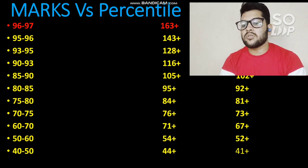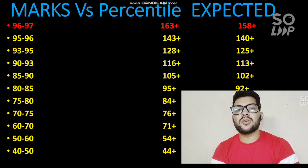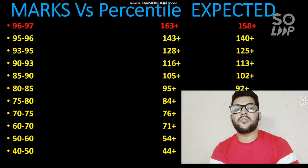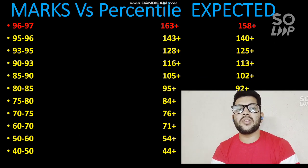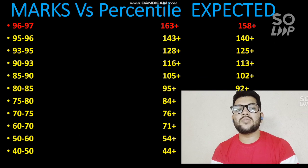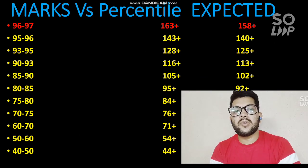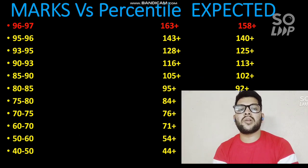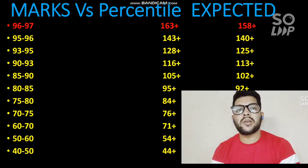More marks versus percentile data is available on screen — you can check it by pausing this video. That covers the full analysis of August 31st Shift 1 and Shift 2: subject-wise difficulty level, expected marks for JEE Advanced for each category, and marks versus expected percentile. Thanks for watching — please subscribe to the channel for all updates on JEE Mains and JEE Advanced and the next shift analysis. Please also share this video with your friends.